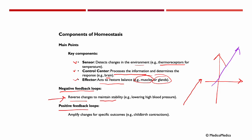We also have positive feedback loops, which amplify changes for specific outcomes. For example, during childbirth, we want contractions to occur.